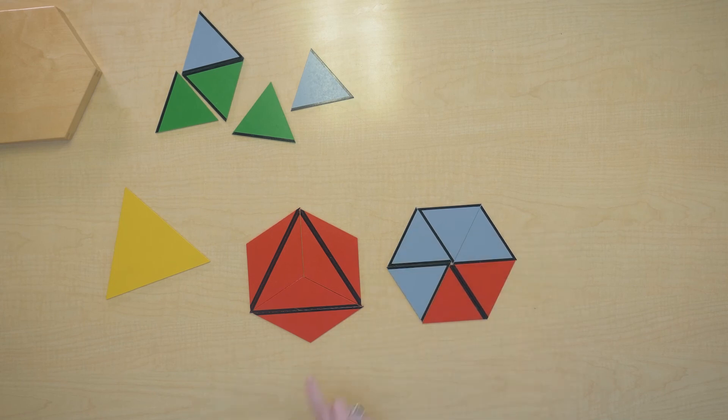These two hexagons are equivalent. They have the same value. There's six of those equivalent triangles in each of them.